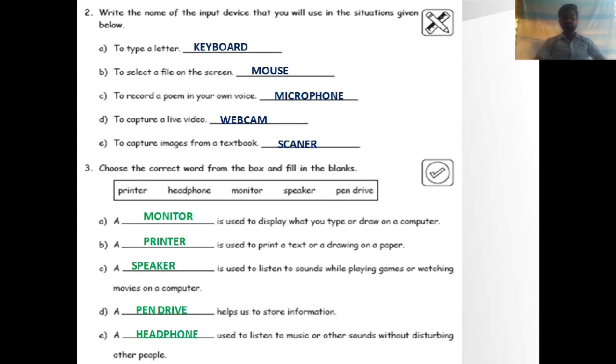D, a blank is used to store information. In pen drive we can store information. E, a blank is used to listen to music or other sounds without disturbing other people. With headphones we can listen to music without disturbing other people.